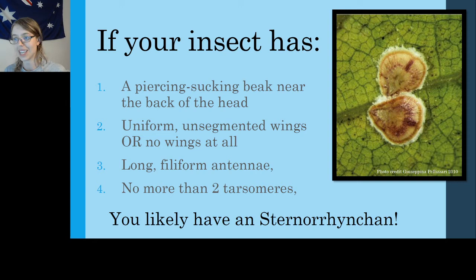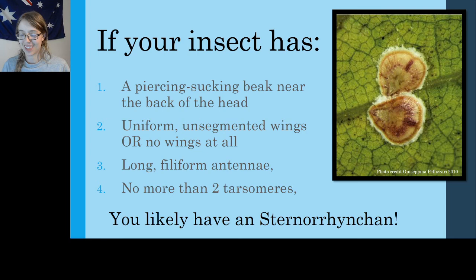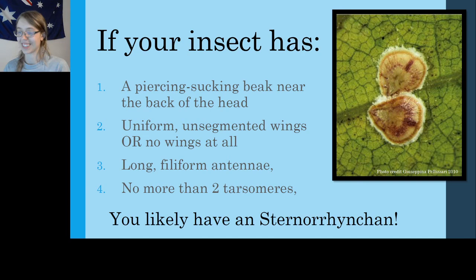One more note: these are scales, also Sternorhynchans, and as you can see I'm not even seeing legs. Sternorhynchans are kind of the weird blob-like group of Hemipterans. So I'll add a fifth ID point: if your bug has a beak so you know it's a Hemipteran, and nothing else — it just looks like a blob — you probably have a Sternorhyncha.